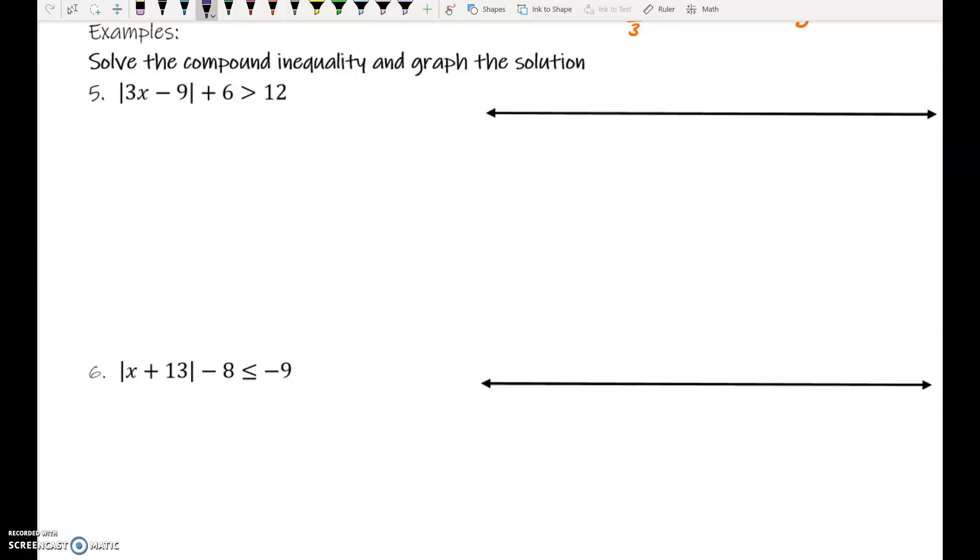Number 5, what would we need to do first? Subtract 6. So, we have absolute value of 3x minus 9 is greater than 6. This is a great or. So, see if you can set this up correctly for the next step.